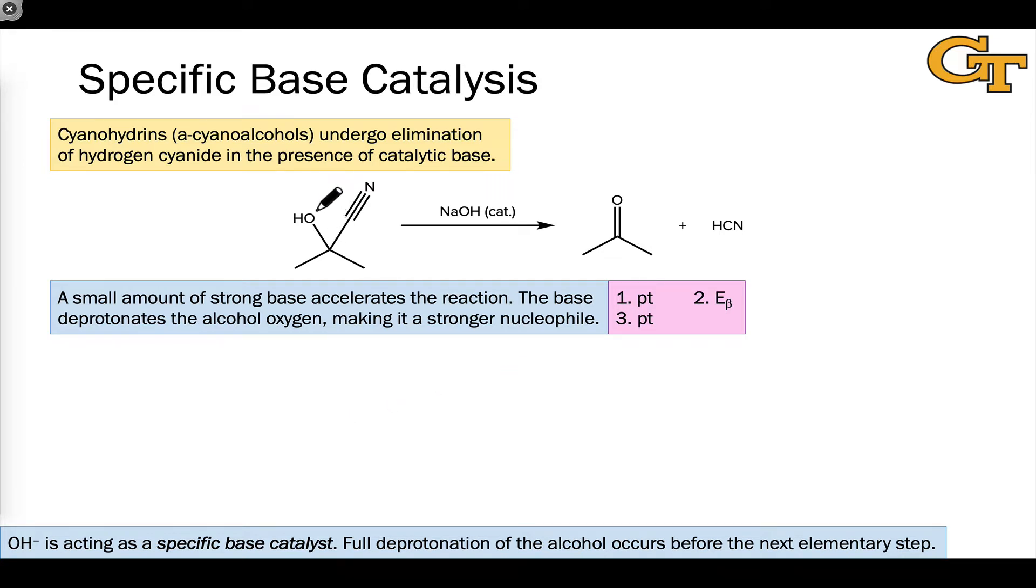We can draw an uncatalyzed mechanism for this process that involves charge separation through beta elimination in the first elementary step, to generate a pair of molecules with opposite charges, followed by proton transfer which generates the neutral products, proton transfer from the cationic intermediate to the anionic cyanide.